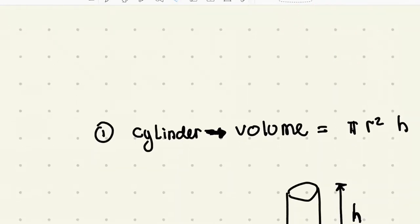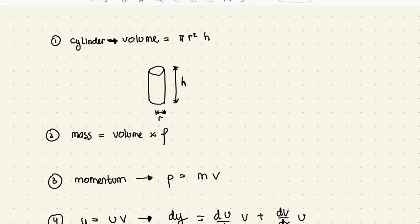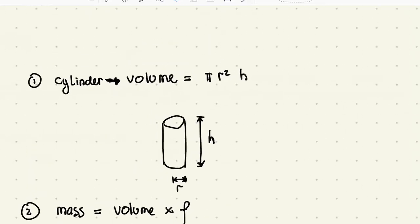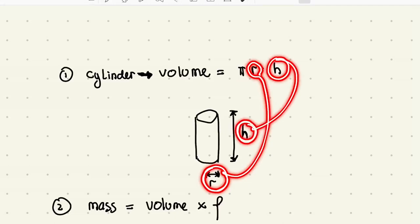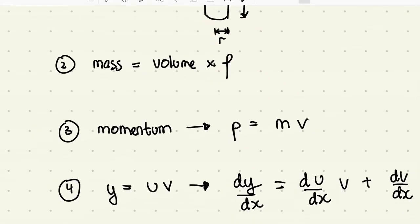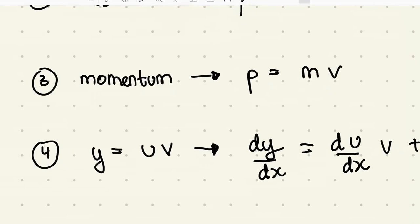Before we answer, I need to revise certain formulas that we learn in secondary school. Volume of cylinder: volume equals pi r squared h, where r is the radius and h is the height of the cylinder. Number two, mass equals volume times density.